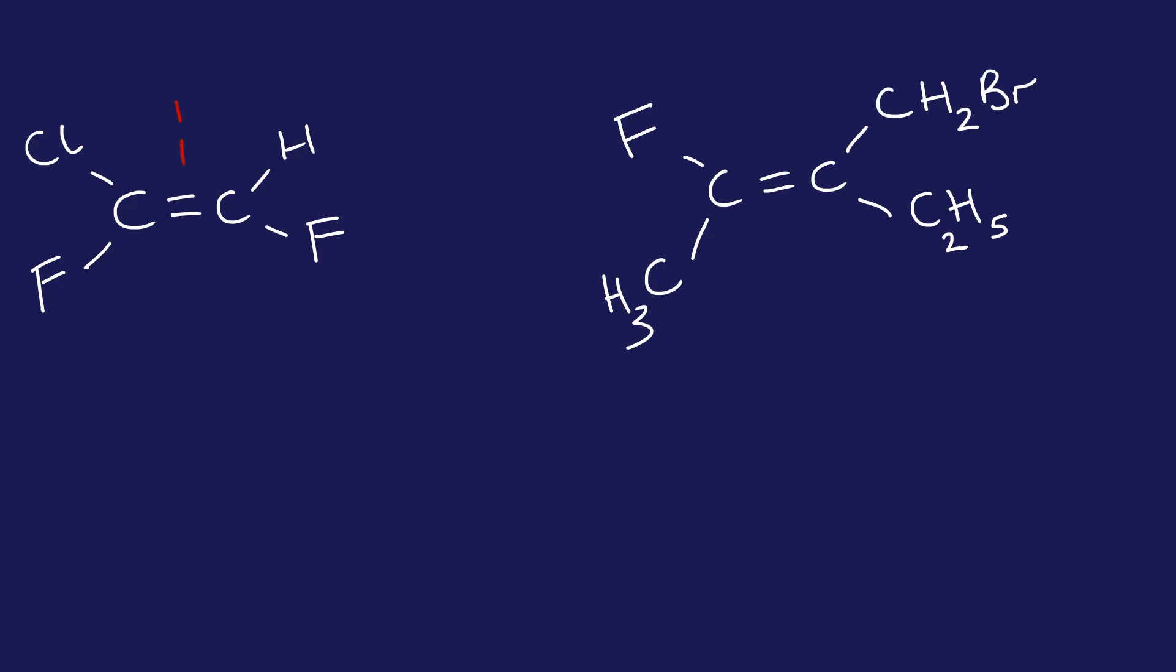Right, let's start over here on the left. Draw your line through the bond. On the right-hand side, we have atomic number 1 and atomic number 9. Nine wins, so number one priority is down the bottom. Left-hand side: atomic number 17 and atomic number 9. 17 wins, so number one, number two. We have opposites here - this is entgegen, this is E, the E isomer. Don't need to know entgegen or zusammen, it just helps us remember them. So this is the E isomer on the left.